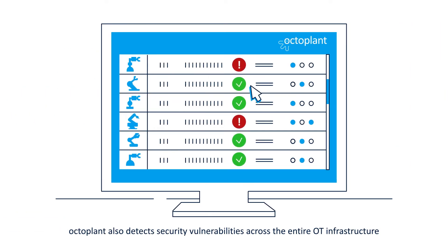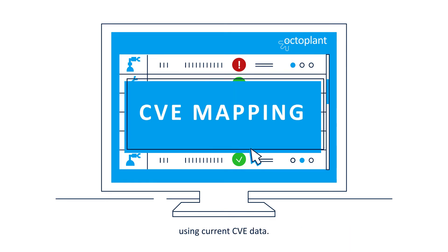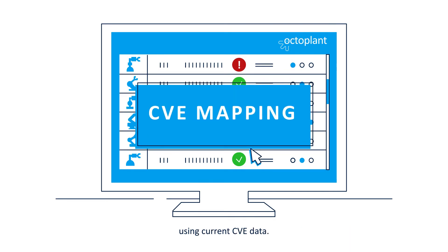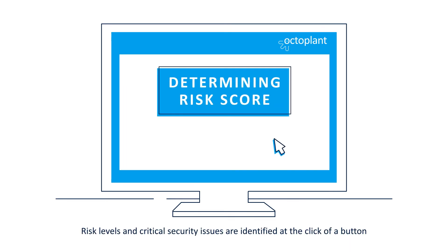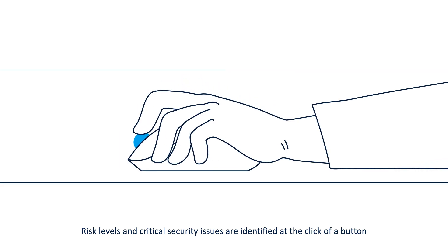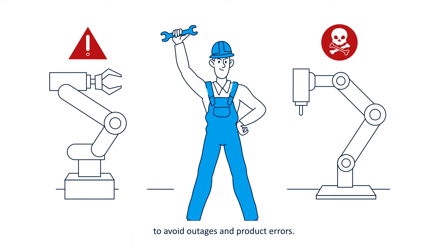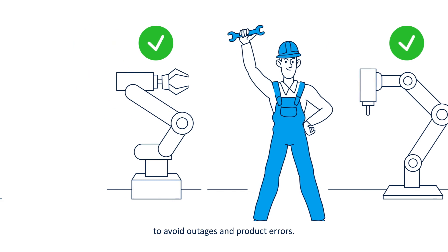OctoPlant also detects security vulnerabilities across the entire OT infrastructure using current CVE data. Risk levels and critical security issues are identified at the click of a button to avoid outages and product errors.